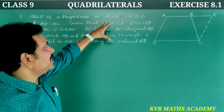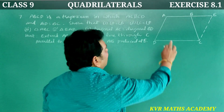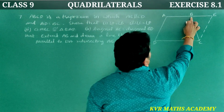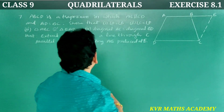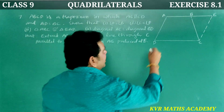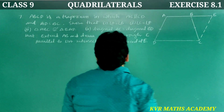ABCD is a trapezium in which AB is parallel to CD, and AD is equal to BC.